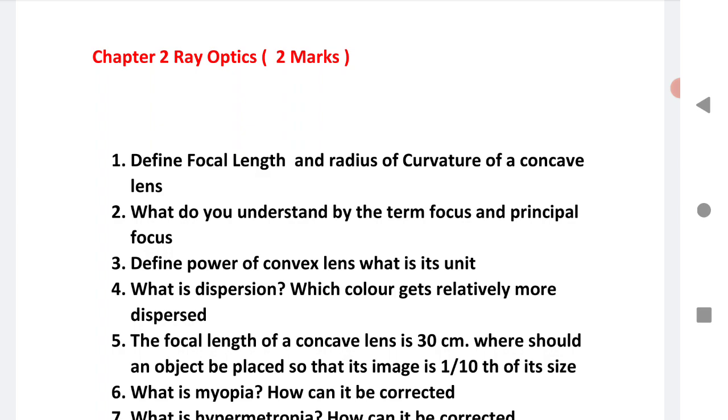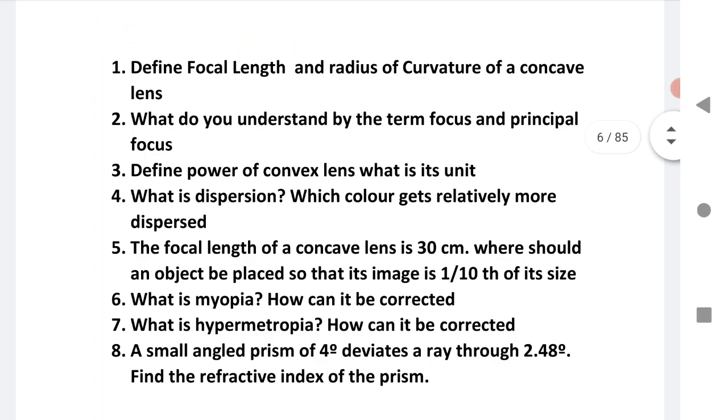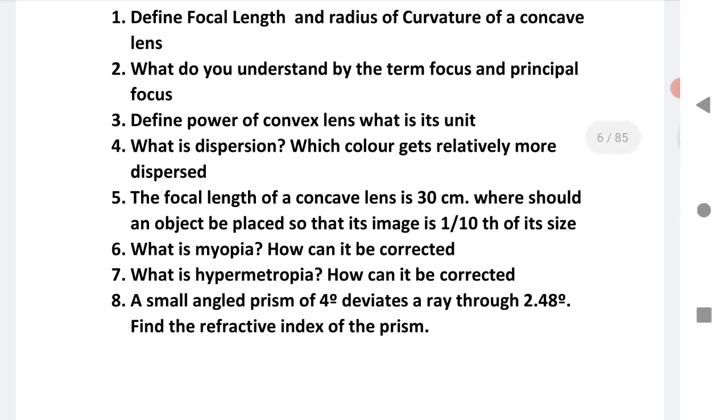The first is ray optics: define focal length and radius of curvature of a concave lens. Second question is what do you understand by the term focus and principal focus? Define power of convex lens, what is its unit. What is dispersion? Which color gets dispersed more? The focal length of a concave lens is 30 cm, where should an object be placed so that its image is 1/10 the size? What is myopia? How can it be corrected? What is hypermetropia? How can it be corrected? A small angled prism of 4 degrees deviates a ray through 2.48 degrees. Find the refractive index of the prism.